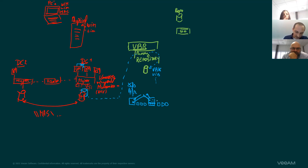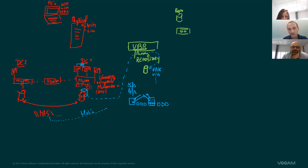What can be done as well? NAS backups are not transformed to VBKs and VIBs but are transformed to blobs — I think 64 megabytes — and being processed by a proxy and dropped on the repository.